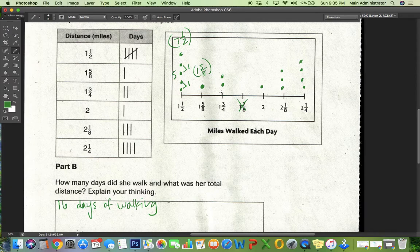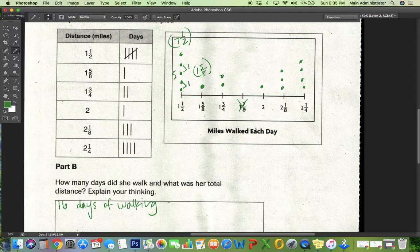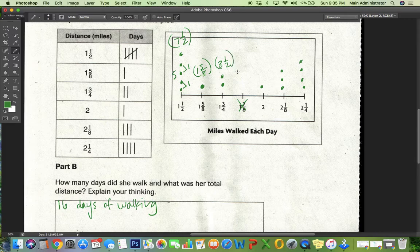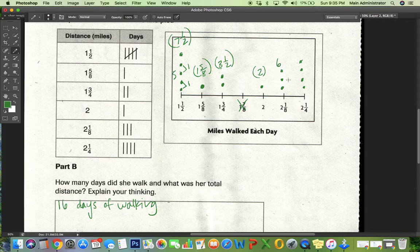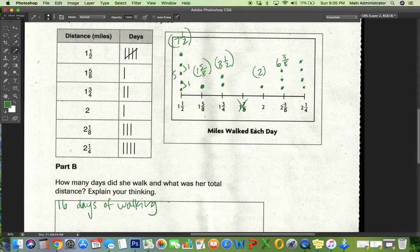One and three-fourths. I know three-fourths plus three-fourths equals one and a half. And I've got two of these ones, so that would give me three and a half. I just got a two here. This is two and one-eighths. Two, four, six plus one, two, three of those, three-eighths.